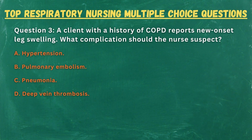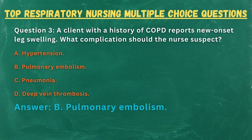Question 3. A client with a history of COPD reports new onset leg swelling. What complication should the nurse suspect? A. Hypertension. B. Pulmonary embolism. C. Pneumonia. D. Deep vein thrombosis. Answer: B. Pulmonary embolism.